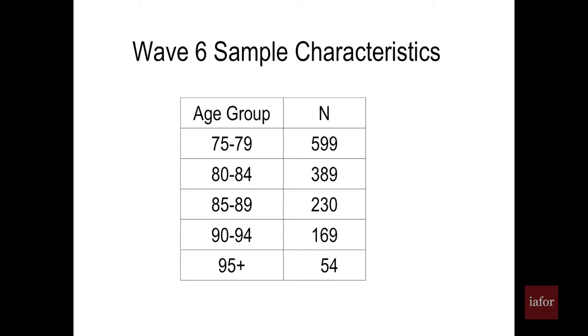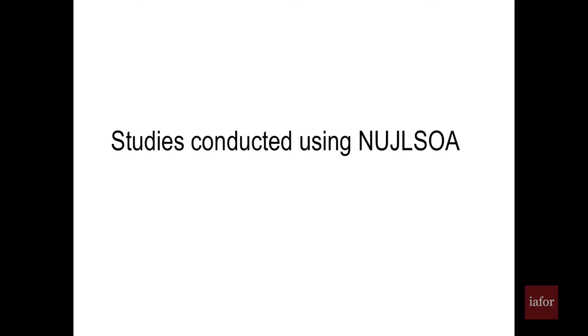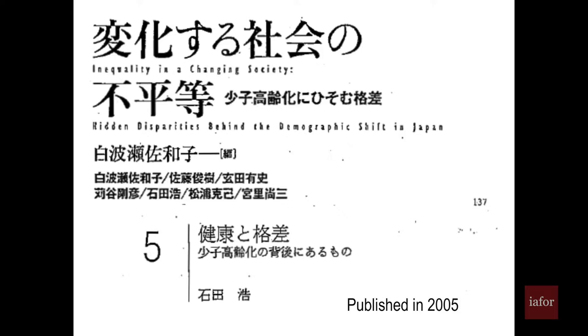Wave six sample characteristics are shown by age group. Professor Ishida — who presented just before me — is one researcher who used my data, studying inequality and health using first and second wave datasets, which are the waves I've already released.